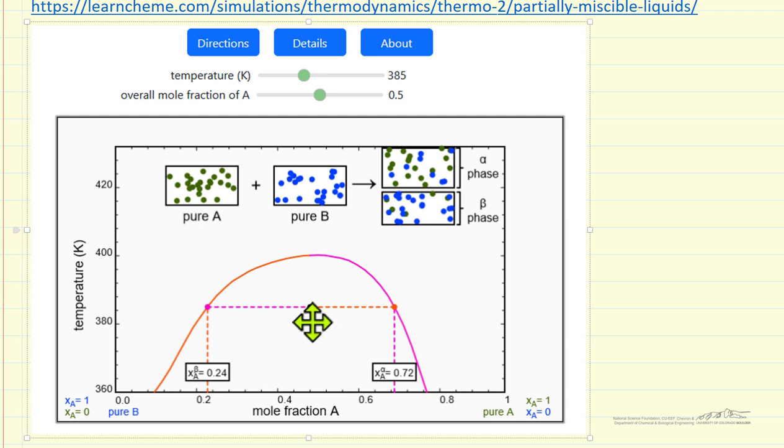But within the envelope, the point represented by the black dot, we have two phases. One phase is majority of component B, so the mole fraction of A is only 0.24. The other phase is majority component A, mole fraction of 0.72.